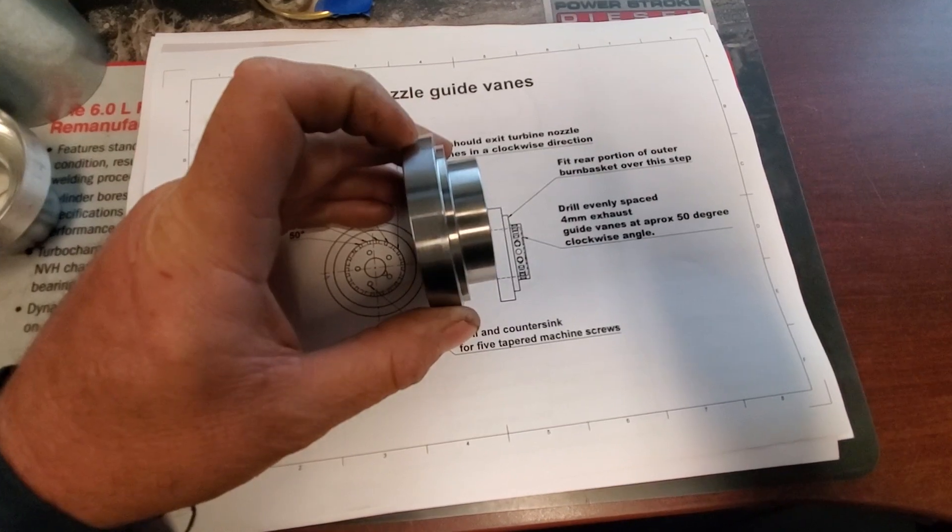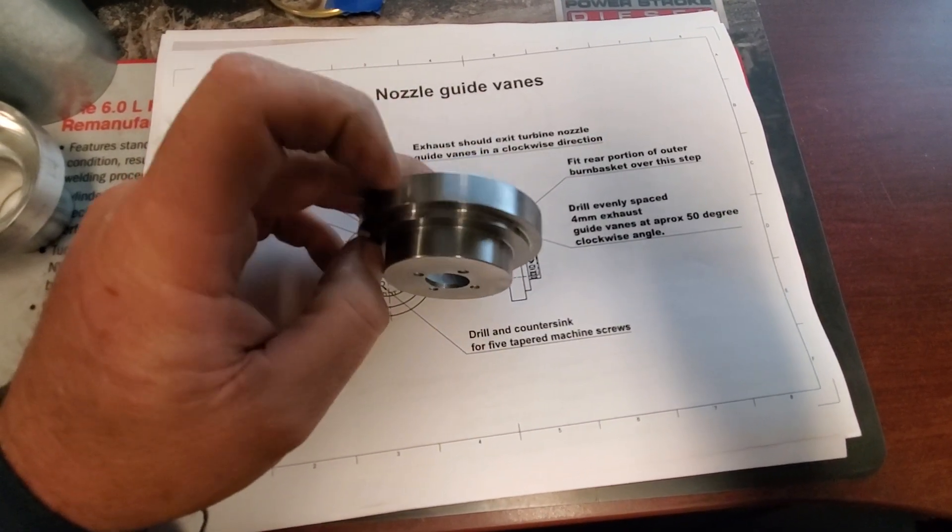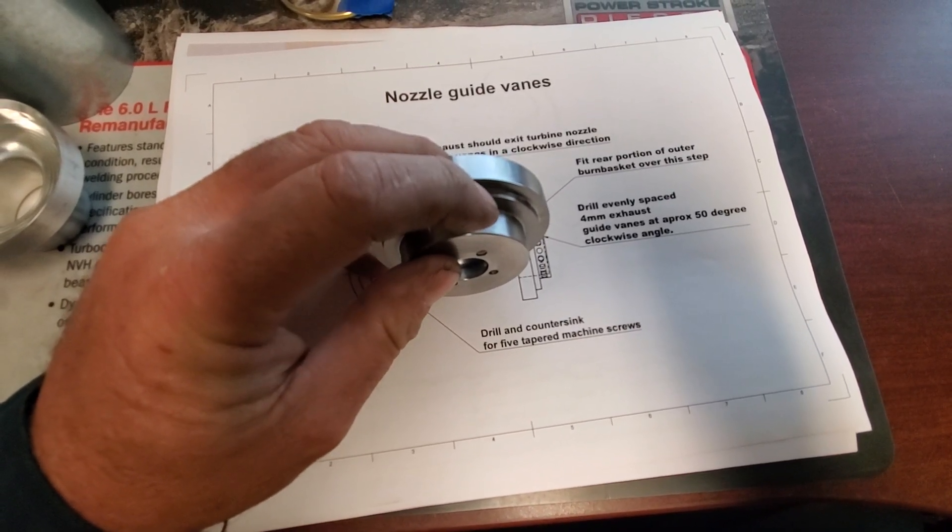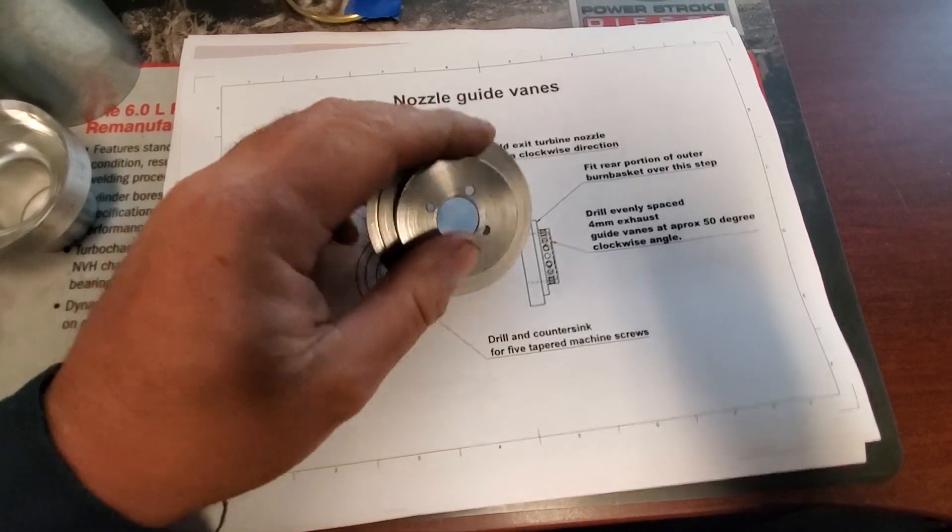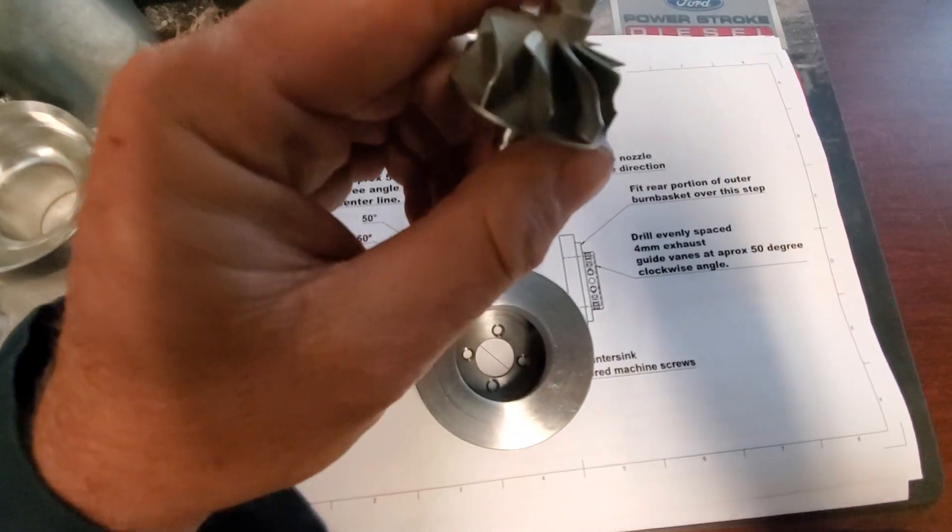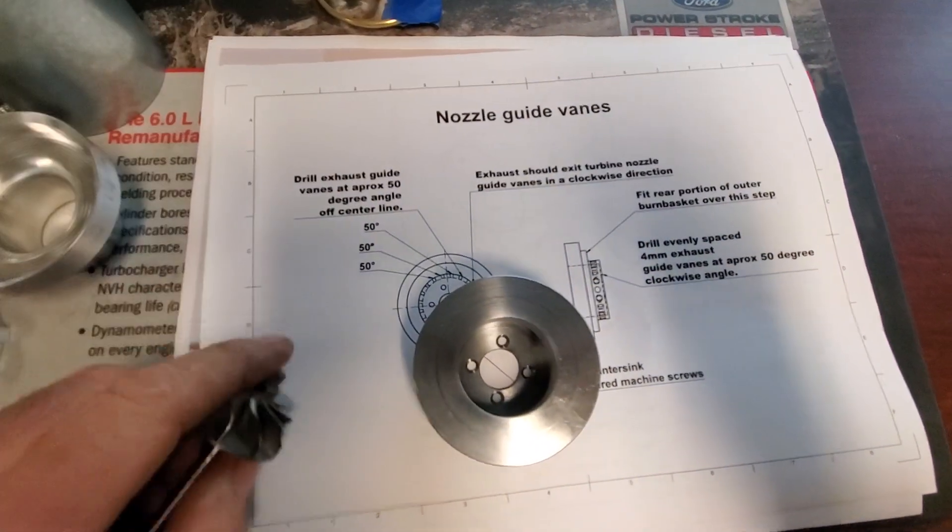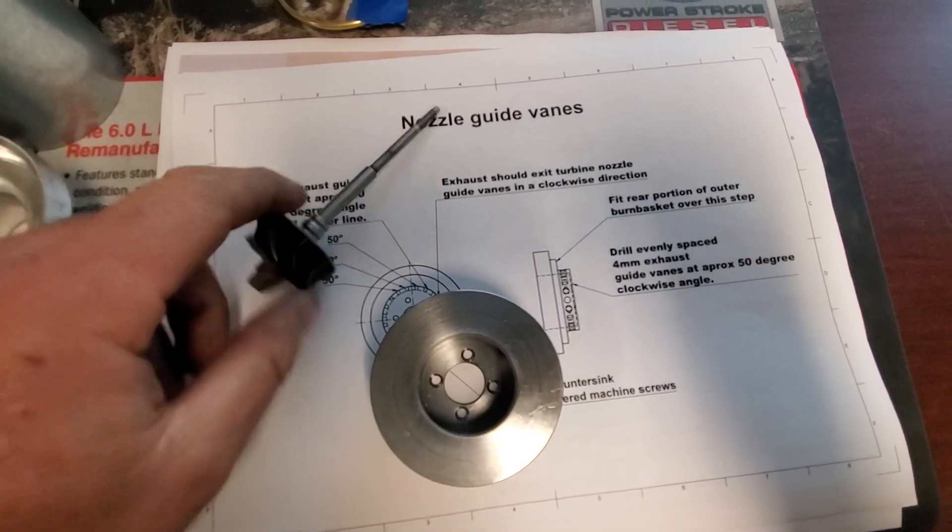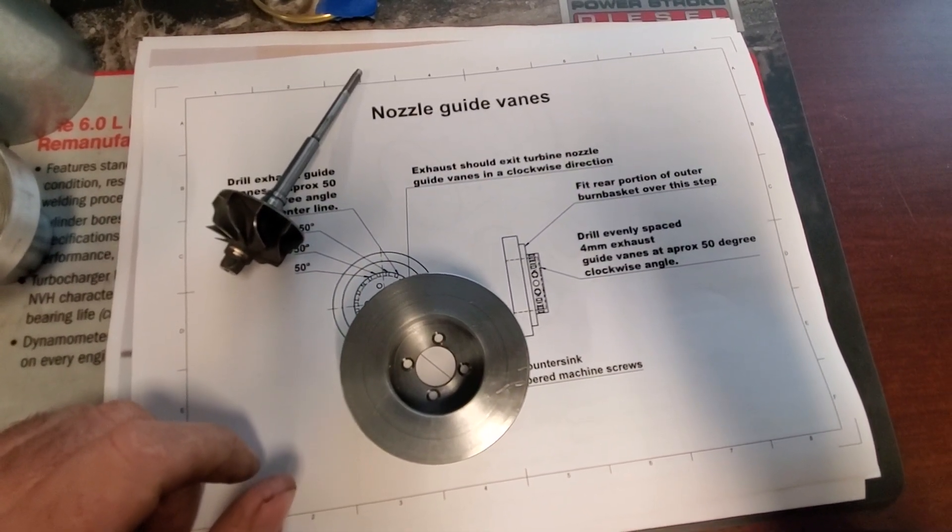We'll set it up on my little mini mill with my rotary table, and they want us to drill these holes at an angle instead of just straight in. They want them drilled this way, so as the hot gas comes in, it comes in and hits the little pockets in this wheel and causes it to spin. So he says he wants approximately a 50 degree angle, so we'll work out some math and we'll get it all set up in the mill, and we'll see you in the next video. Thanks for watching.